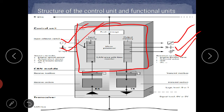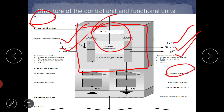Whatever fault messages are created are stored in the fault memory. When an OBD socket is connected, the fault memory sends signals through the K-wire, so when you connect the OBD to the on-board diagnostic socket, you get the error messages via the K-wire. Now, in the CAN module there is a receiver section and a transmission section. The receiver section receives input messages from sensors, and the transmission section sends output from the microprocessor to the transceiver.